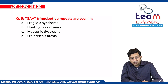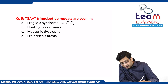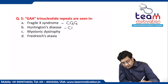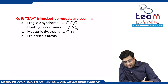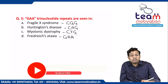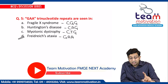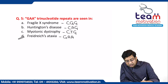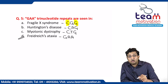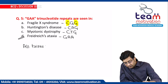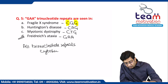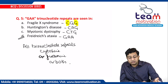GAA trinucleotide repeats are seen in which condition? In Fragile X syndrome you get CGG repeats; in Huntington's disease, CAG repeats; in myotonic dystrophy, CTG repeats; and in Friedreich's ataxia, GAA repeats. So GAA repeats are seen in Friedreich's ataxia. Always remember: all trinucleotide repeats either have cytosine or guanine or both — this will help you solve questions.